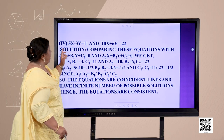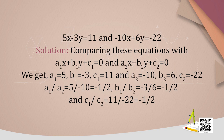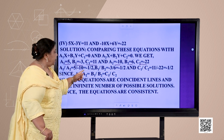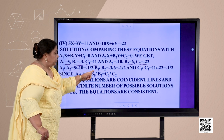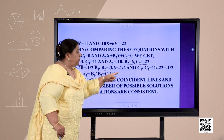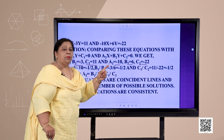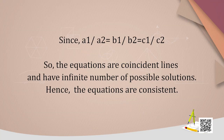Next part: 5x − 3y = 11 and −10x + 6y = −22. Comparing, we get a1=5, b1=−3, c1=11, a2=−10, b2=6, c2=−22. The ratios: a1/a2 = 5/(−10) = −1/2, b1/b2 = (−3)/6 = −1/2, and c1/c2 = 11/(−22) = −1/2. Since a1/a2 = b1/b2 = c1/c2, the equations are coincident lines and have an infinite number of possible solutions. Hence the equations are said to be consistent.